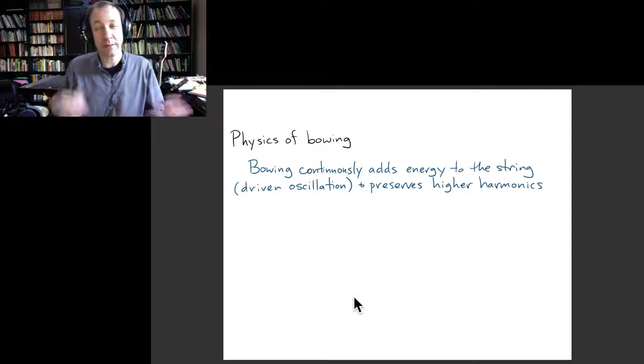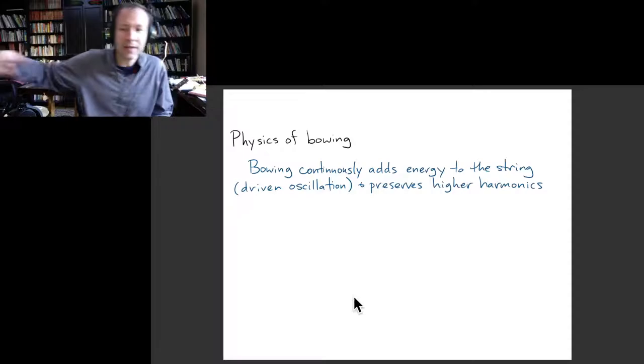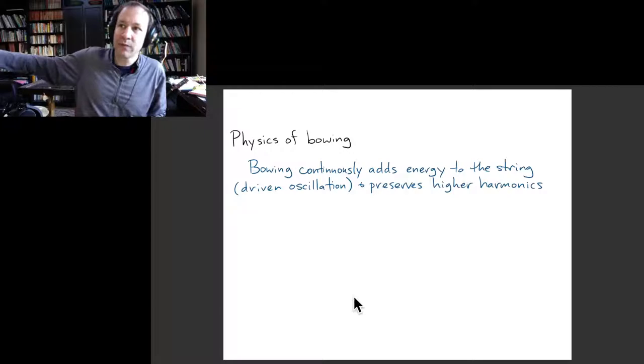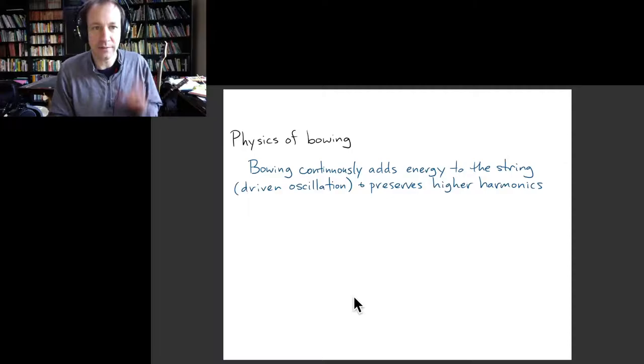So how does the bow apply a periodic force? It actually doesn't look like it's doing anything periodic. The bow is going back and forth but that's not very frequently whereas the string is vibrating very rapidly. So even when the bow is just going in one direction it's managing to drive the oscillation of the string.